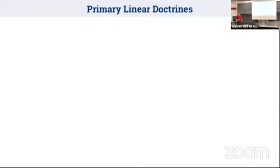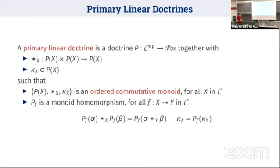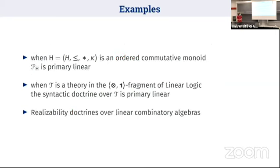To deal with quantitative reasoning, we need to work in some minimal fragment of linear logic. We introduce the notion of a primary linear doctrine, which models the tensor-one fragment of linear logic. A primary linear doctrine is a doctrine where each fiber is an ordered commutative monoid, and re-indexing maps are monotone monoid homomorphisms. If H is an ordered commutative monoid, then the doctrine of H-valued predicates is primary linear with the pointwise structure. You can also build the syntactic doctrine over a theory in the tensor-one fragment of linear logic to get a primary linear doctrine.